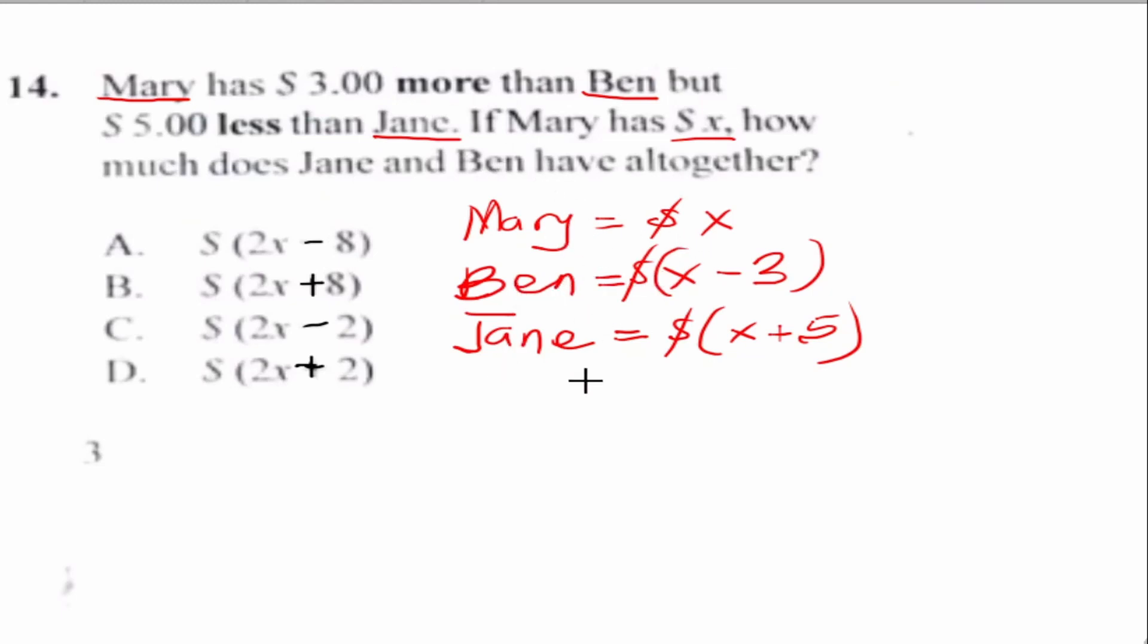Now the question we are looking for is how much do Jane and Ben have altogether? So this is Ben and this is Jane. Altogether in a word problem means we are adding.